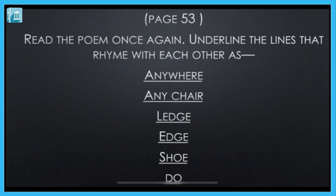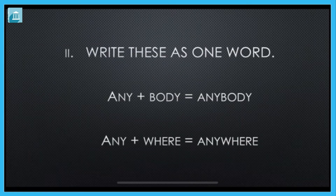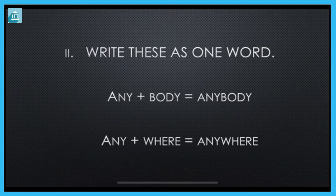Moving on — second question: write these as one word. Aapko yeh do words mila ke ek word likhna hai. Any plus buddy becomes anybody. Again, any plus where becomes anywhere. You have to complete these similarly.